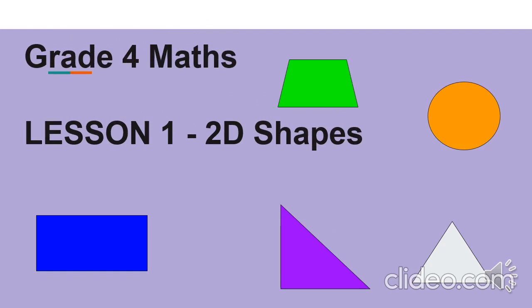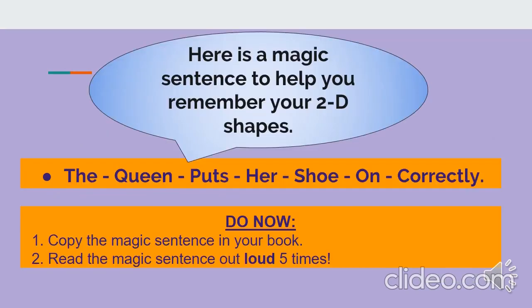Today's lesson is on 2D shapes. After today's lesson, you'll be able to identify, draw and label. Here's a magic sentence to help you remember your 2D shapes: The queen puts her shoes on correctly. That's it. The queen puts her shoes on correctly.